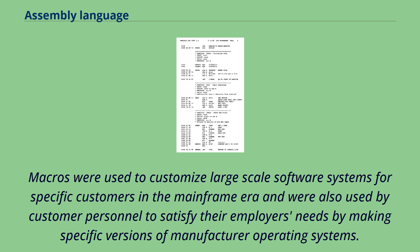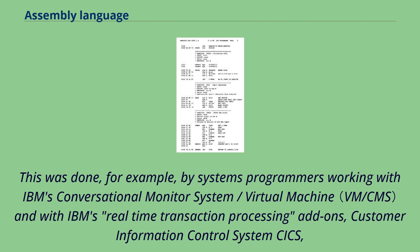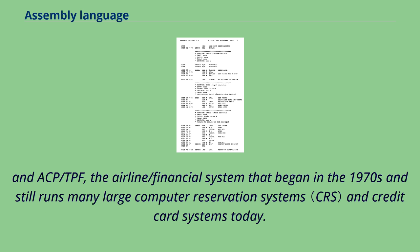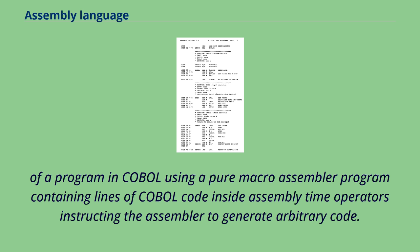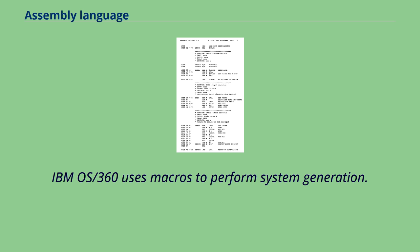Macros were used to customize large-scale software systems for specific customers in the mainframe era and were also used by customer personnel to make specific versions of manufacturer operating systems. This was done, for example, by systems programmers working with IBM's conversational monitor system, virtual machine, and with IBM's real-time transaction processing add-ons, customer information control system, and ACP/TPF, the airline/financial system that began in the 1970s and still runs many large computer reservation systems and credit card systems today. IBM OS/360 uses macros to perform system generation, where the user specifies options by coding a series of assembler macros, and assembling these macros generates a job stream to build the system.